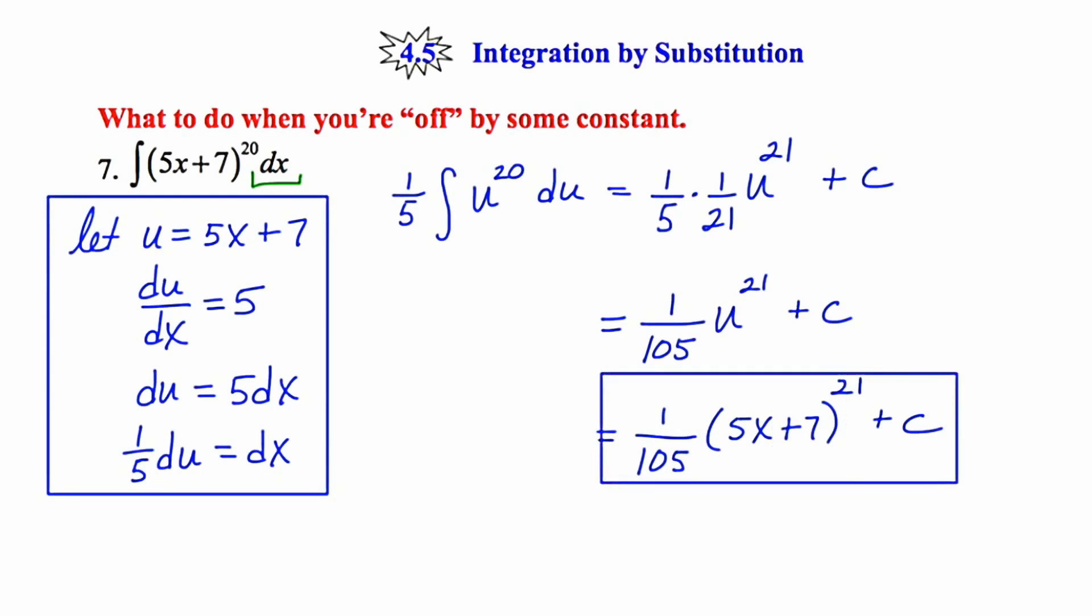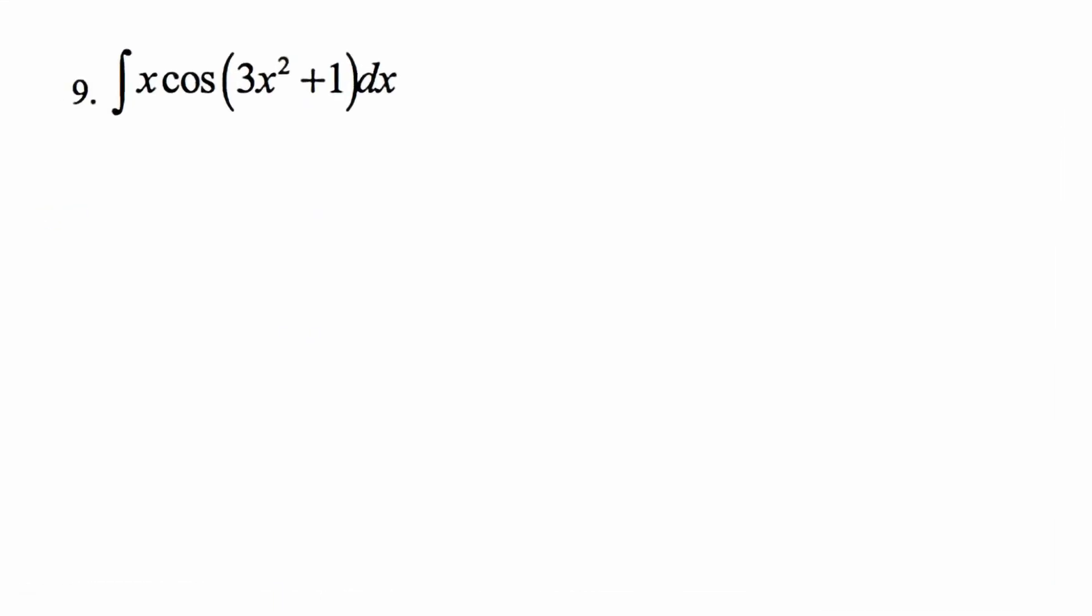Let's look at another example. In problem number 9, I'm considering u to be 3x squared plus 1. Its derivative would be 6x. Now we have an x present at the beginning, but it's not a 6x. So we're off by some constant, namely 6.